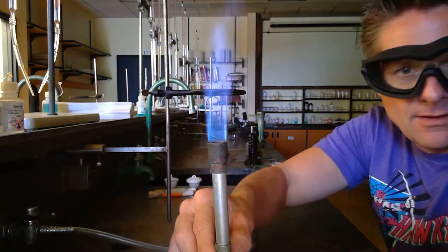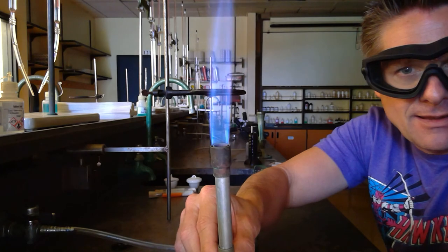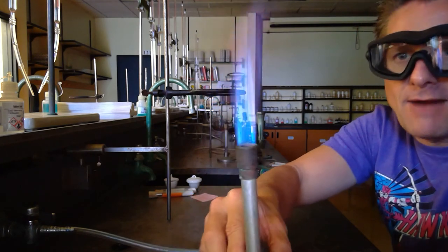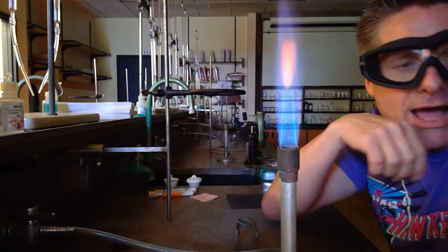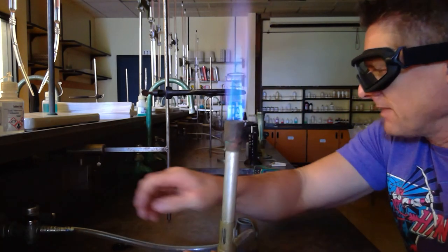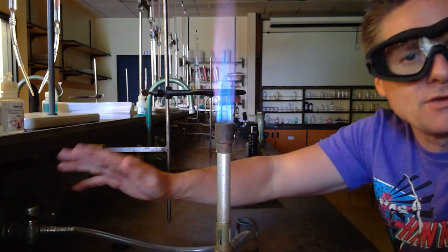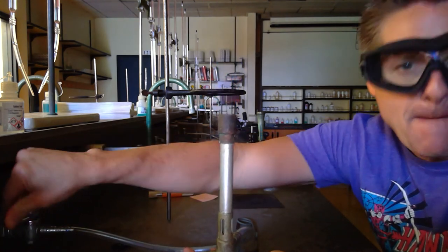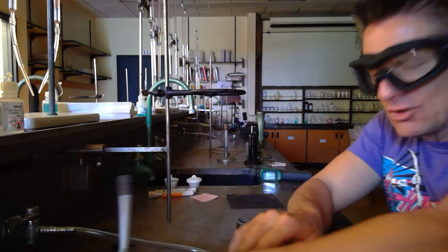If I want to fry the doo-doo out of it, I increase the fuel and air—crackle, crackle, crackle. Now you've got your hot flame. Those are the different kinds of flames. Pretty straightforward. I think we're good with Bunsen burners. When you're done, just turn your fuel off and you're good to go.